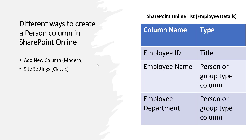Let me explain with an example. Assume that I am an HR in a particular organization and need to add the employees who work in that organization. I will create a SharePoint Online list as Employee Details and add the columns as Employee ID, Employee Name, and Employee Department. Using this person or group type column, we can show the department also.